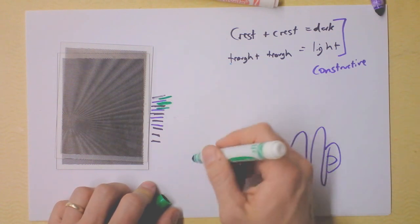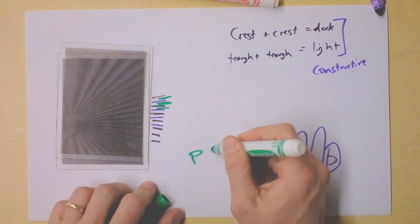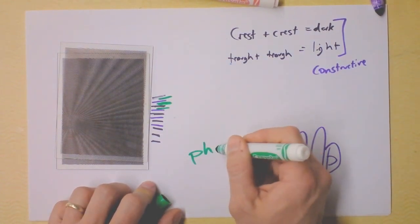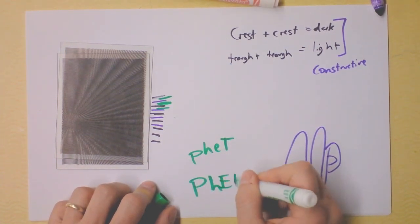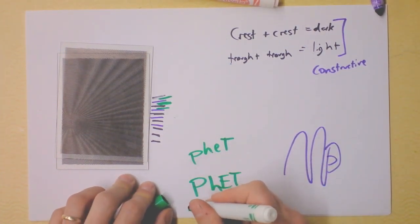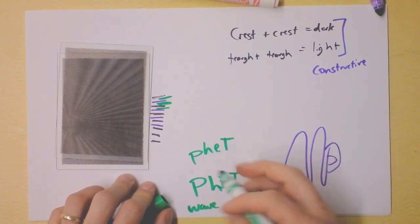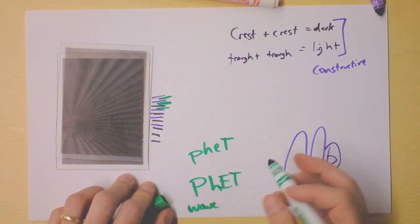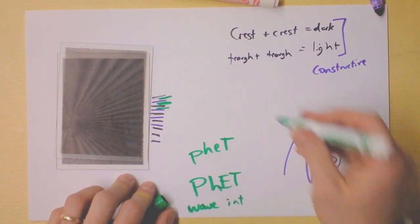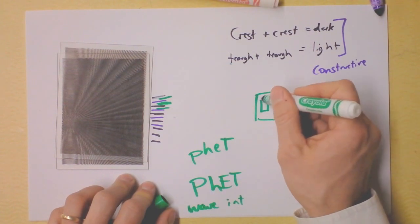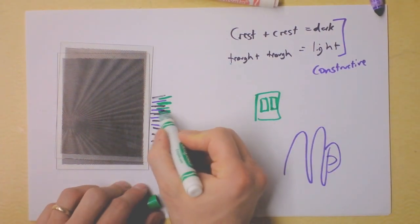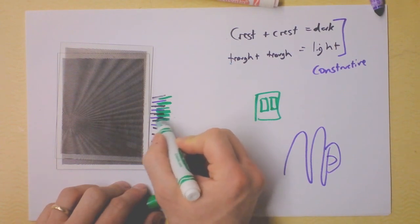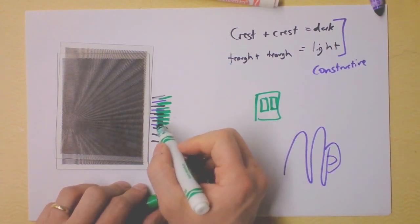You need to go to PhET - go there right now and play with the wave interference simulation. It will help you understand this. Seriously, pause this and go play with it - you can come back if you want. The point is that in between the light and dark lines, we've got always destructive interference.